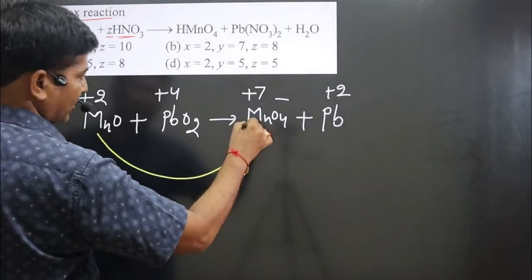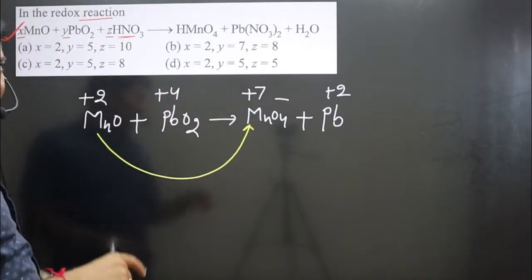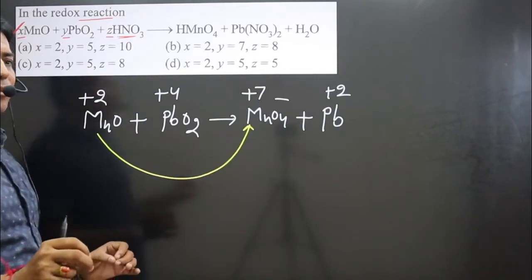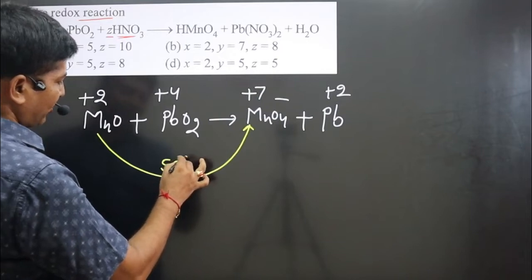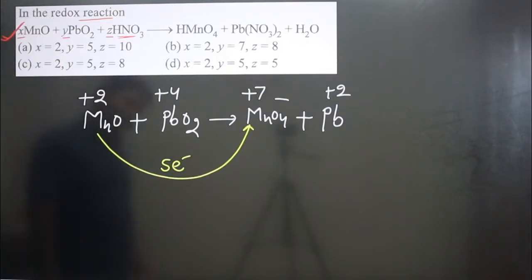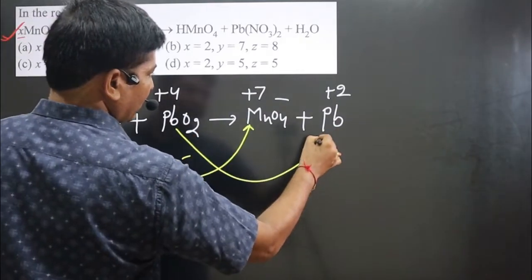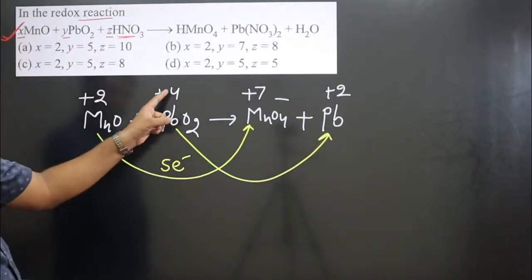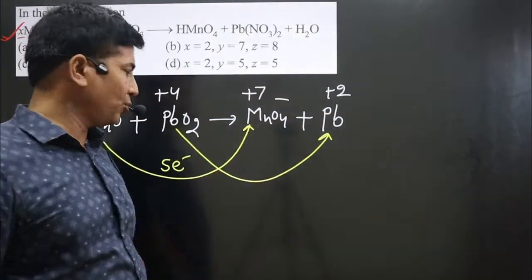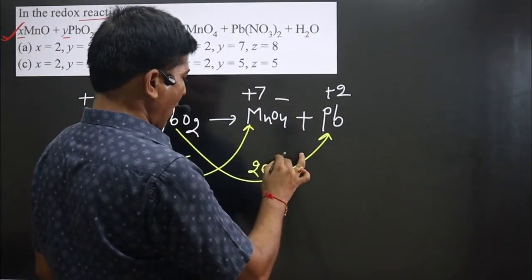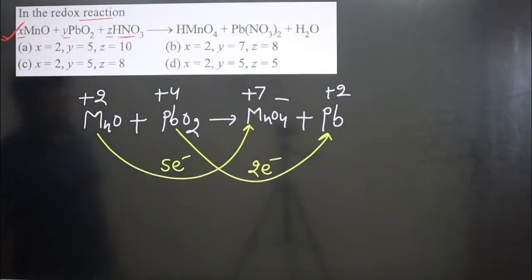Now we compare oxidation numbers of the same element on both sides. For manganese: it goes from plus two to plus seven — a difference of five electrons. For lead: it goes from plus four to plus two — a difference of two electrons. So we have a five-electron transfer for Mn and a two-electron transfer for Pb.